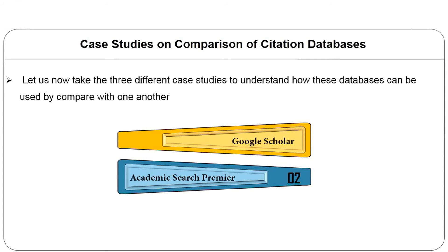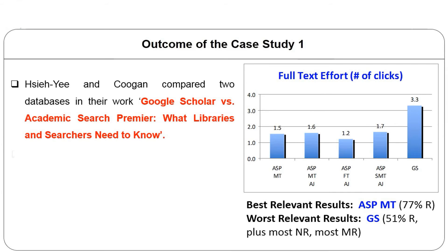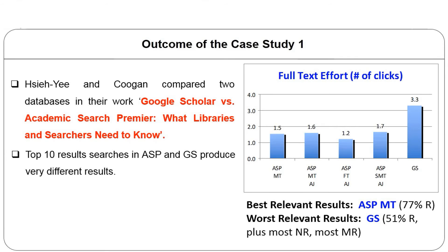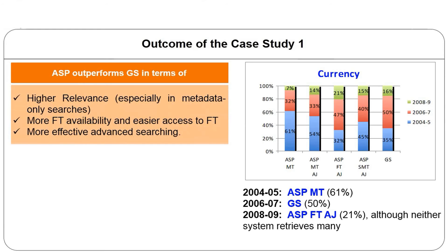Let us now take three different case studies to understand how these databases can be used. These case studies compare data sources with one another. In case study one, Heise and Coogan compared two databases — Google Scholar versus Academic Search Premier — asking what libraries and searchers need to know. They framed four different questions for searching the databases, and only the top ten items of each search set were examined for relevance, full text availability, full text effort, currency and overlap.